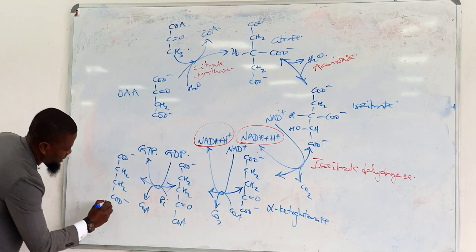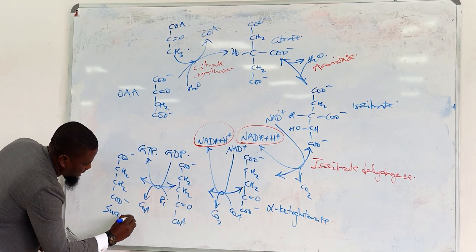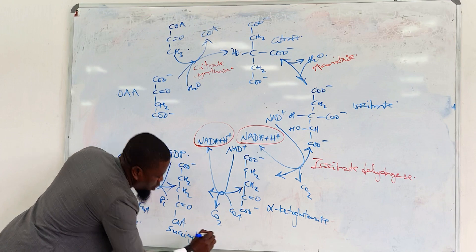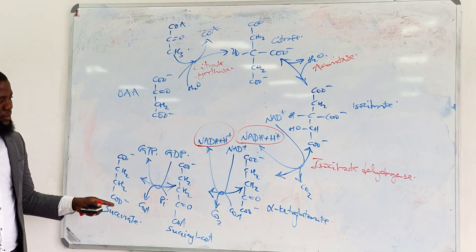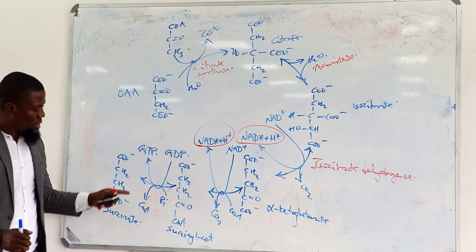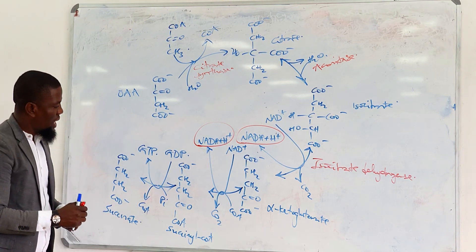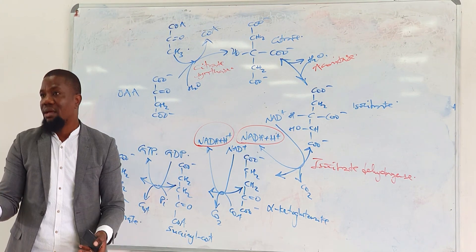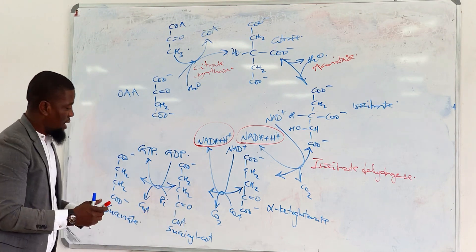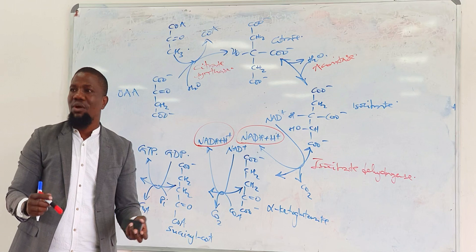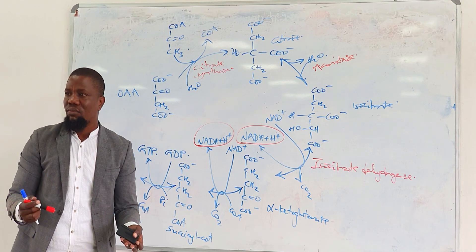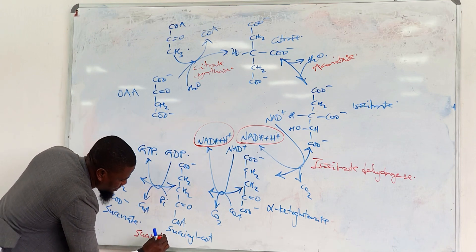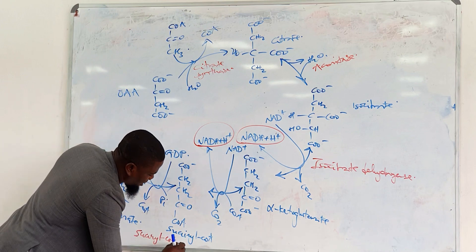The end product will have no co-A and it will be succinate. This here is succinate produced from succinyl-CoA. The enzyme here is actually referred to as succinyl-CoA synthetase. Other books will call it succinyl-CoA thiokinase. So, whichever you like is okay.